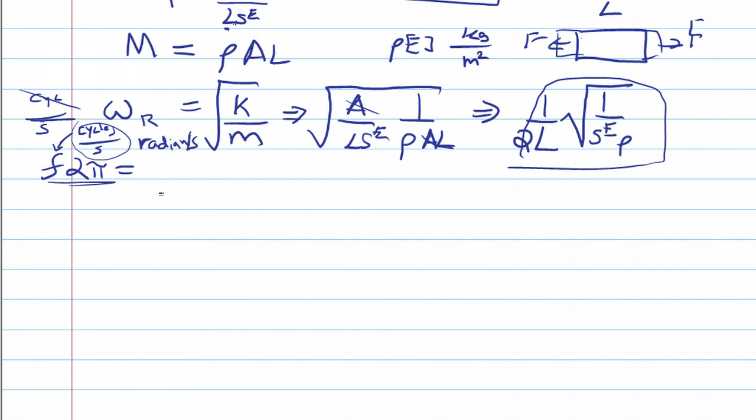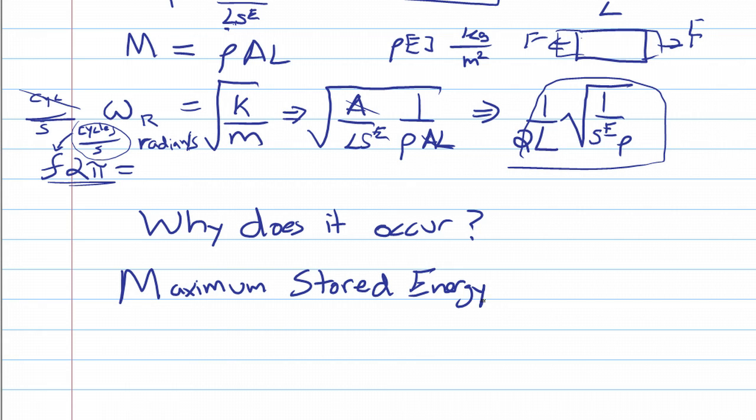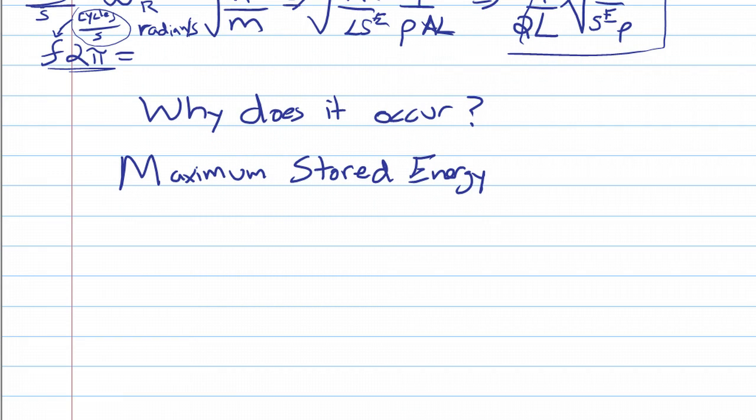So the next question we have is: why does it occur? And it occurs because of one reason, and you should remember this reason. It occurs because of maximum stored energy. There's a frequency at which the maximum stored energy in the system occurs, and this frequency is denoted by the resonance frequency.